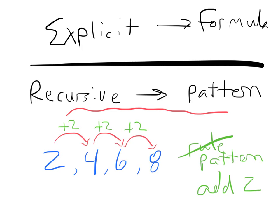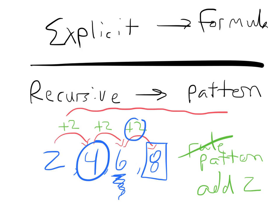This is the basis of recursive definitions. A recursive definition is different than explicit because the explicit gives you a formula that lets you find any term you want. But in the recursive definition, you're using a pattern to find one term based on knowing the previous term. To know what a given term is, you first need to know the term in front of it, so you can add two, and so on. So this is based on knowing a pattern, but it also requires us to know certain terms.